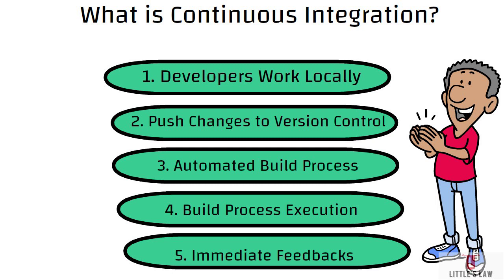Here's an example you can use in interviews. Suppose a team of developers is working on a web application hosted on GitHub. Each developer works on a feature branch locally and pushes their changes to the corresponding branch on GitHub. When a developer pushes changes, GitHub triggers a web hook that notifies the Jenkins CI server. Jenkins pulls the latest code, compiles it, runs unit tests, and performs other checks. If all checks pass successfully, Jenkins reports a successful build; if there are issues, Jenkins notifies the developers with immediate feedback. The developers then review the feedback, fix the issues, and push new changes, triggering another CI build cycle — a continuous process until the issues are merged to the main branch.